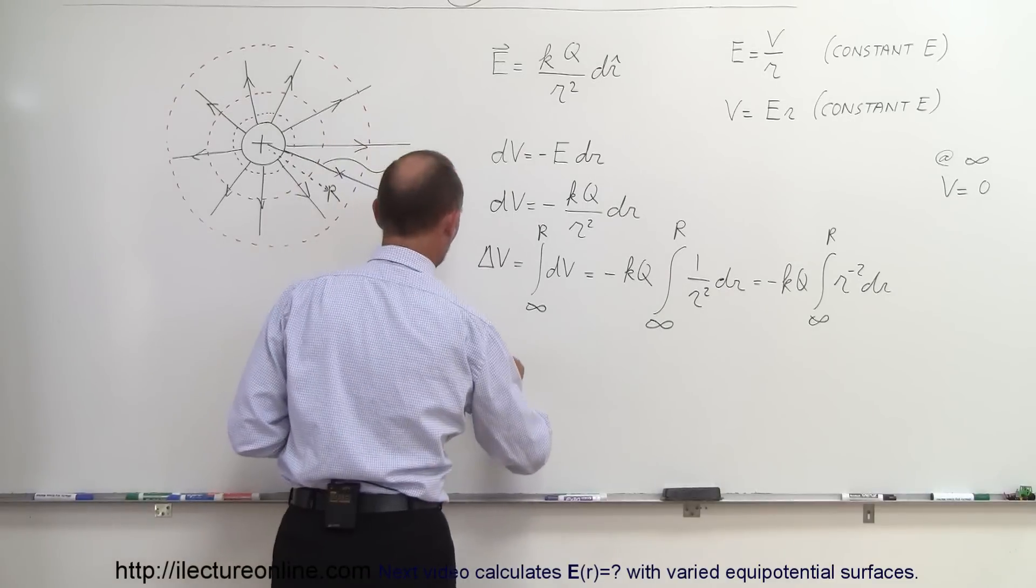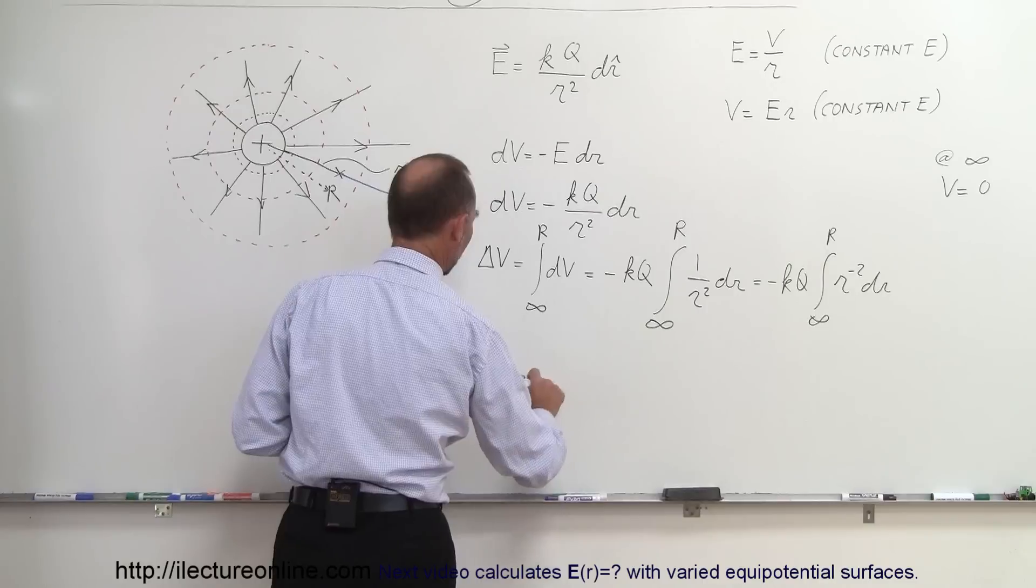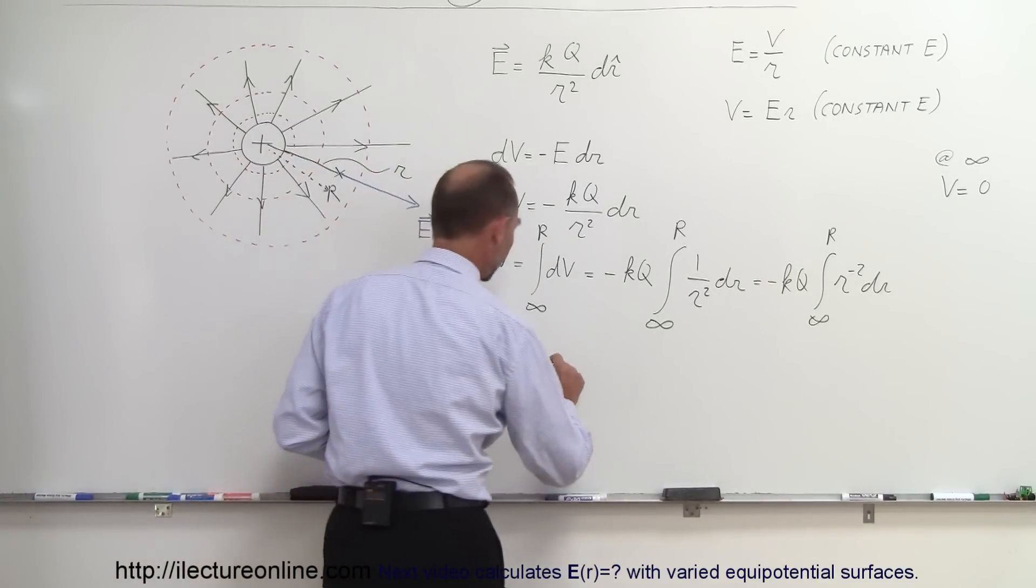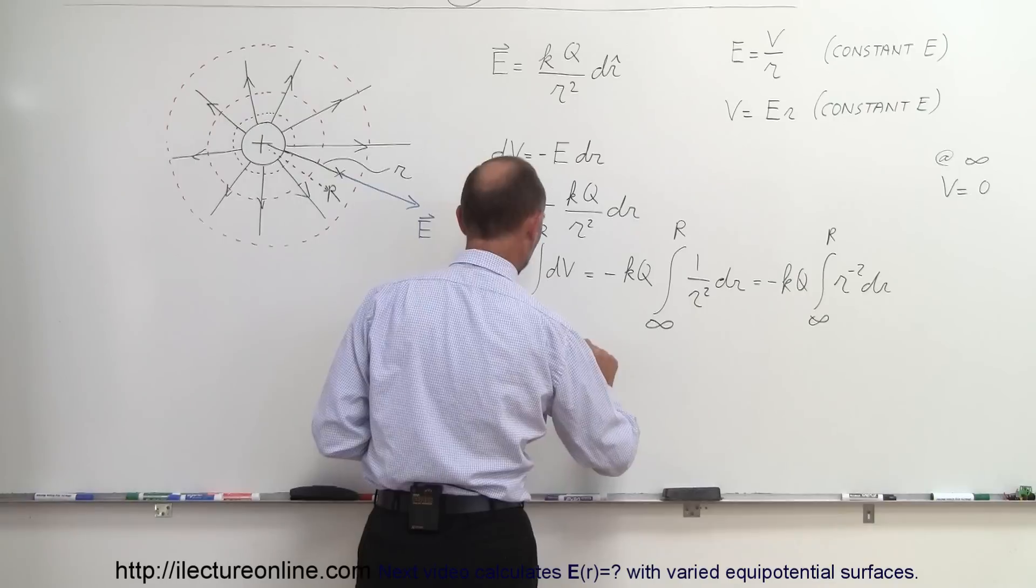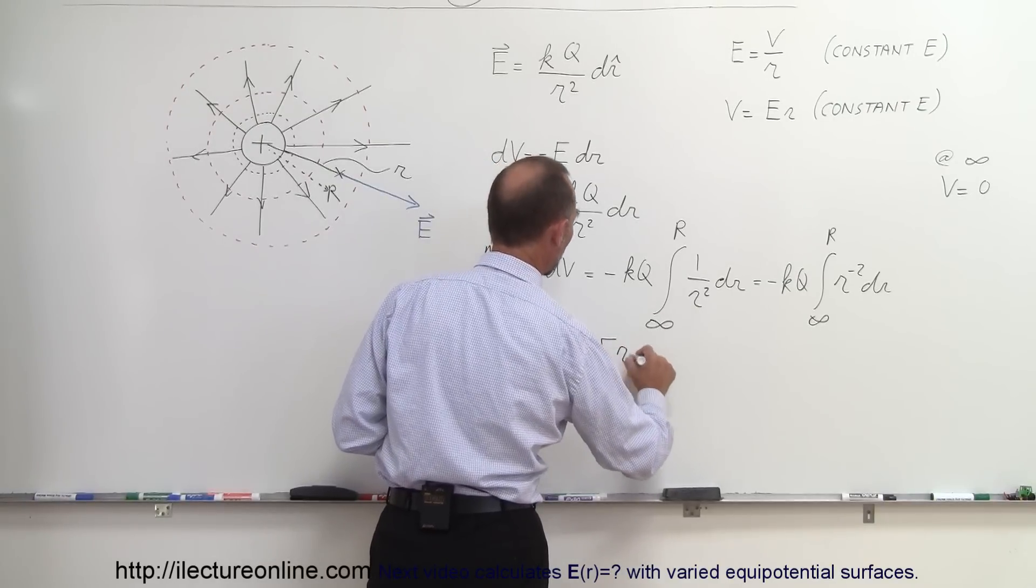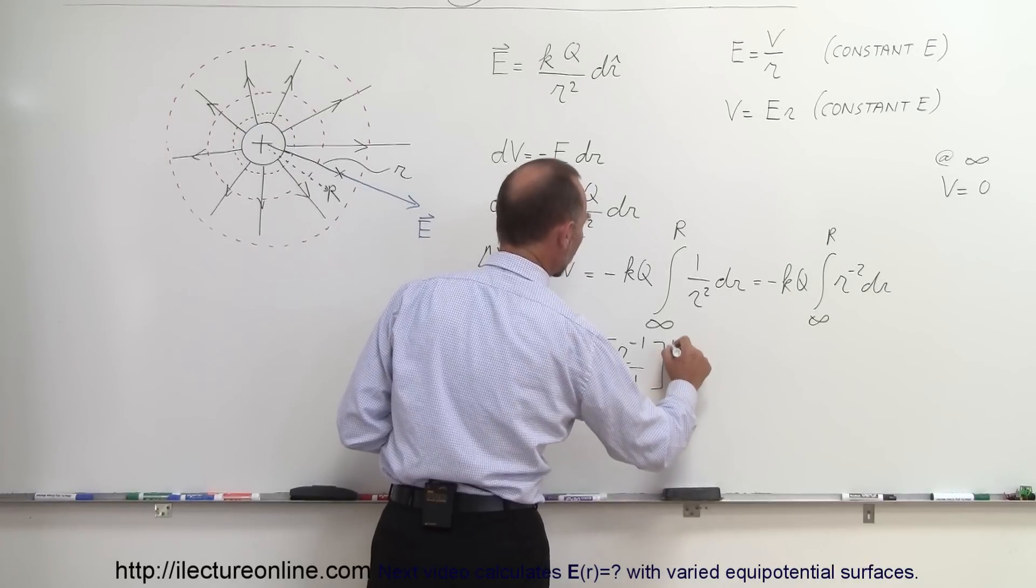Now we can go ahead and integrate. The difference in potential from infinity to R, so that's going from infinity to R, how does the potential change? This is equal to minus KQ. When we do the integral we add one to the exponent, so that would be R to the minus one over the new exponent, evaluated from infinity to R.